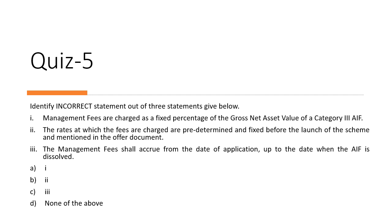Question 5: identify the incorrect statement from three options. Statement one — management fees are charged as a fixed percentage of gross net asset value of Category 3 AIFs — is correct. Statement two — rates are predetermined and fixed before the scheme launch and mentioned in the offer document — is also correct. Statement three — management fees shall accrue from the date of application — is incorrect. It actually accrues from the date of first close up to the date when the AIF is dissolved. The answer is C.